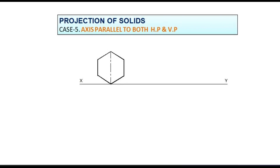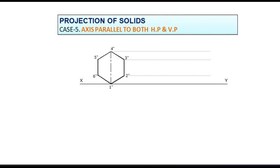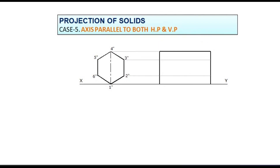Name the corners of the hexagon as 1 double dash, 2 double dash, etc. To draw the elevation, draw projectors horizontally from all the corners of the hexagon. Maintain the length of the prism in the elevation. Darken the required lines and name the edges accordingly.